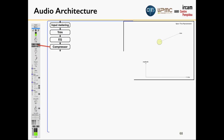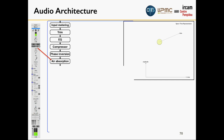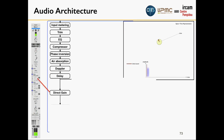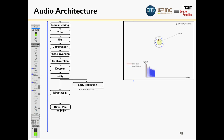You send the audio channels to a spatial audio renderer which does the job and outputs whatever format you want — it's like a plug-out. For your speaker setup you still need EQ, compressors, and phase inversions. Beyond the standard mixing section, we come to spatial audio parameters like air absorption, Doppler effect, delays, and direct gain. If you think about a room impulse response — sound coming from a direction — that's the direct gain, which you then pan into your system.